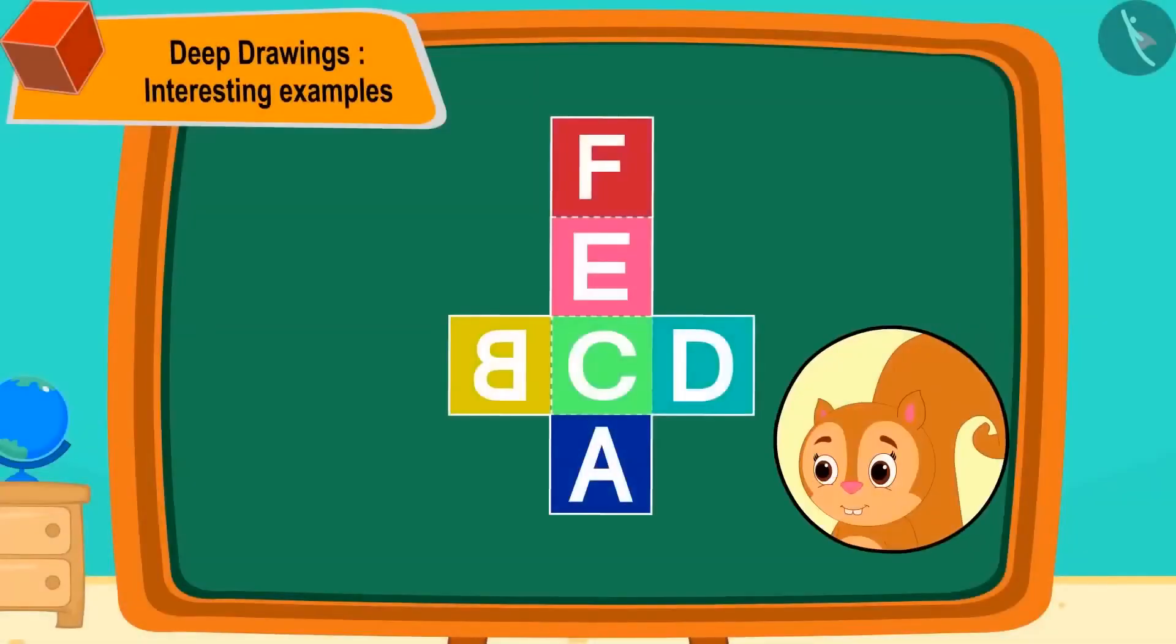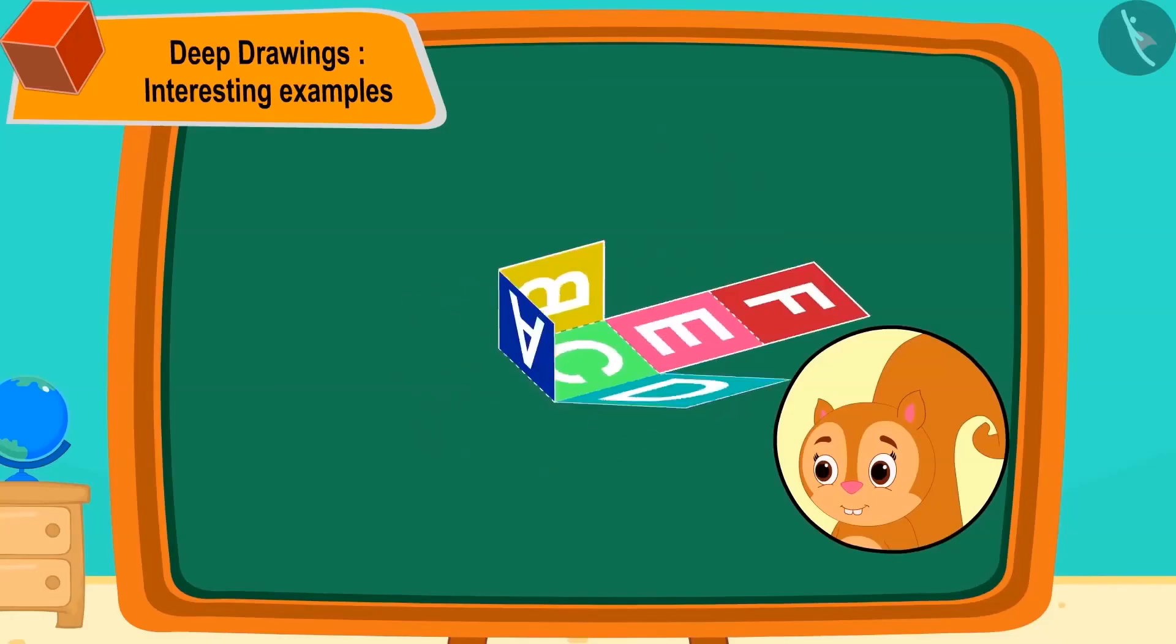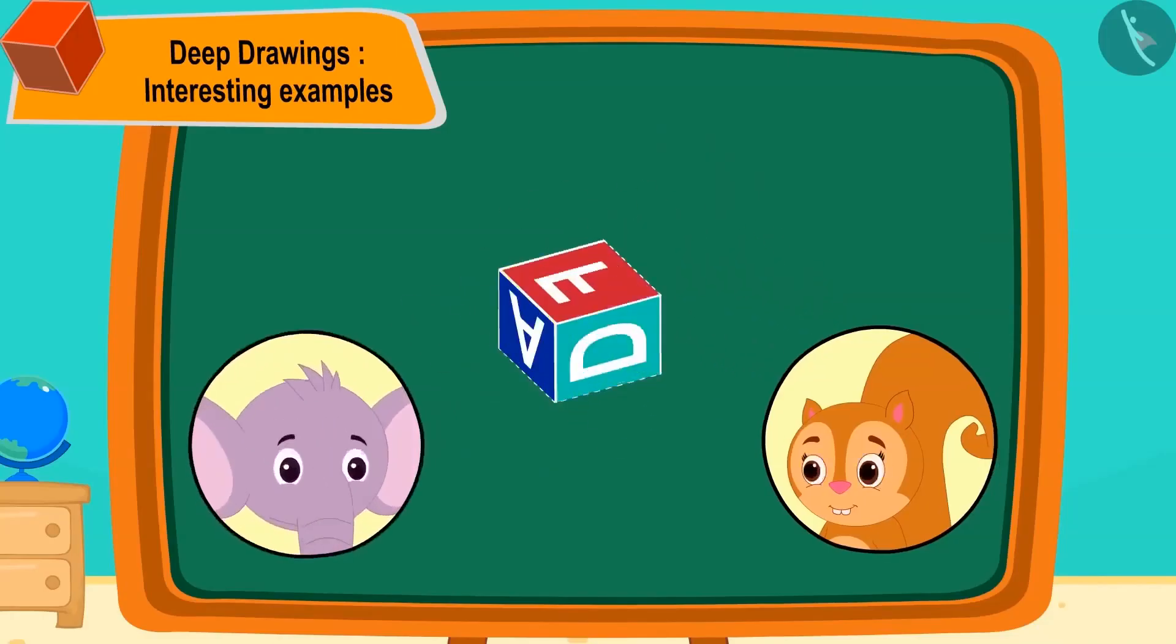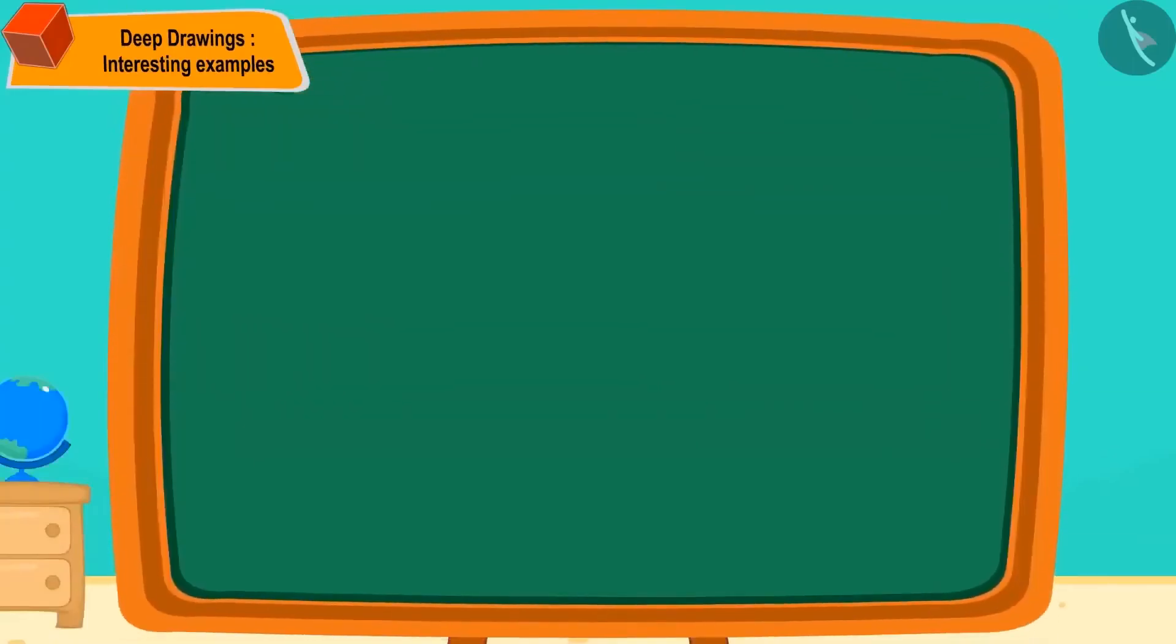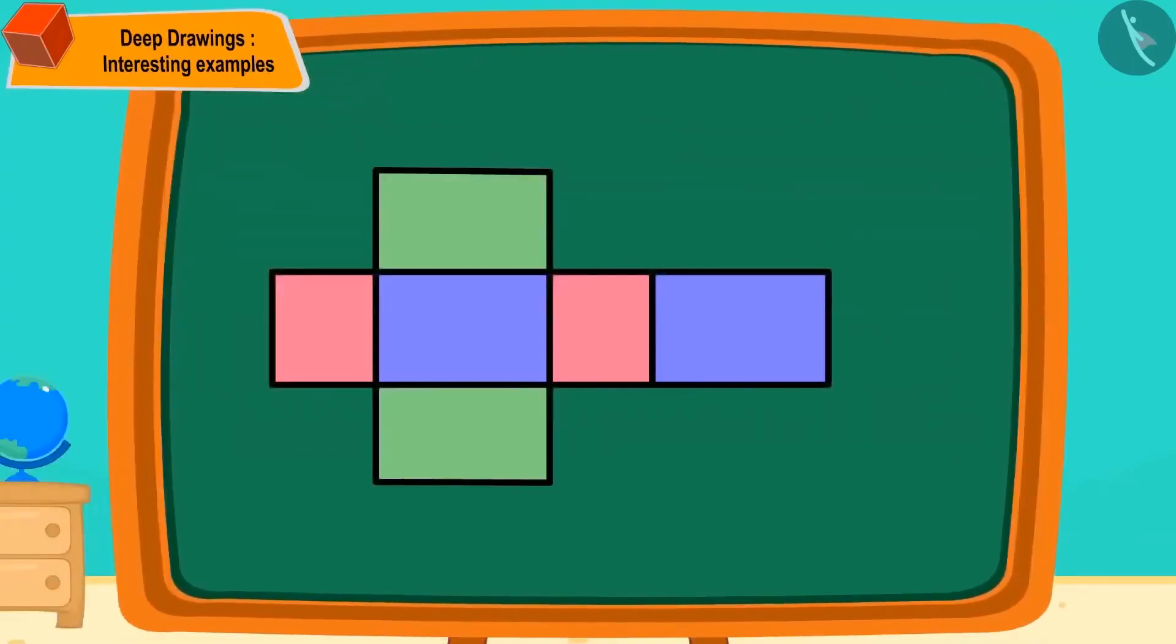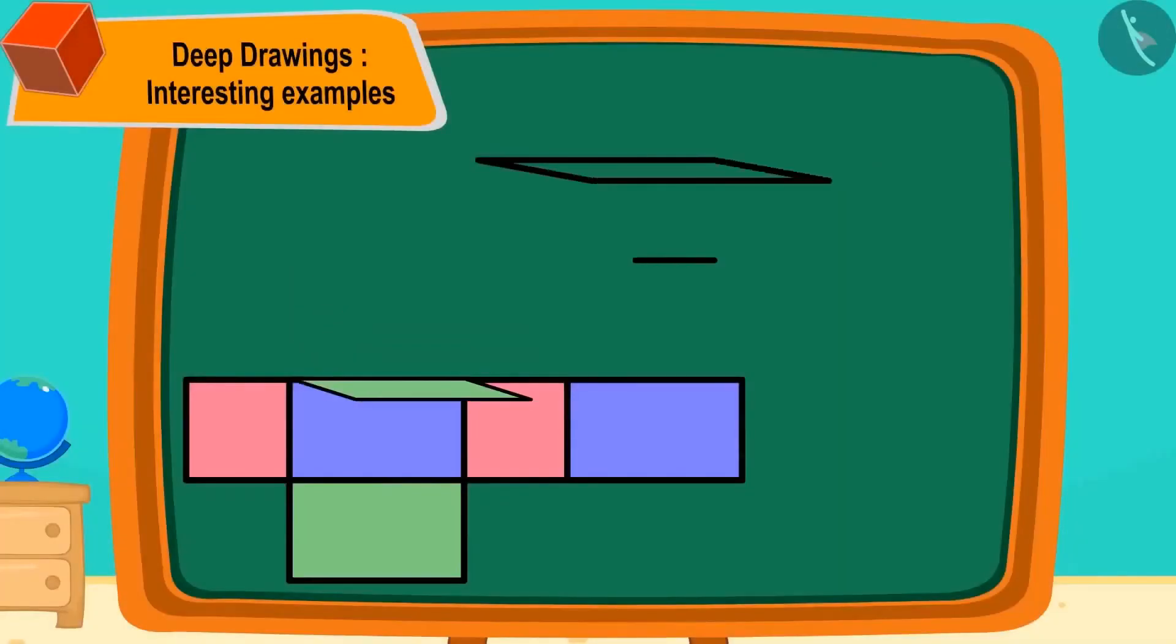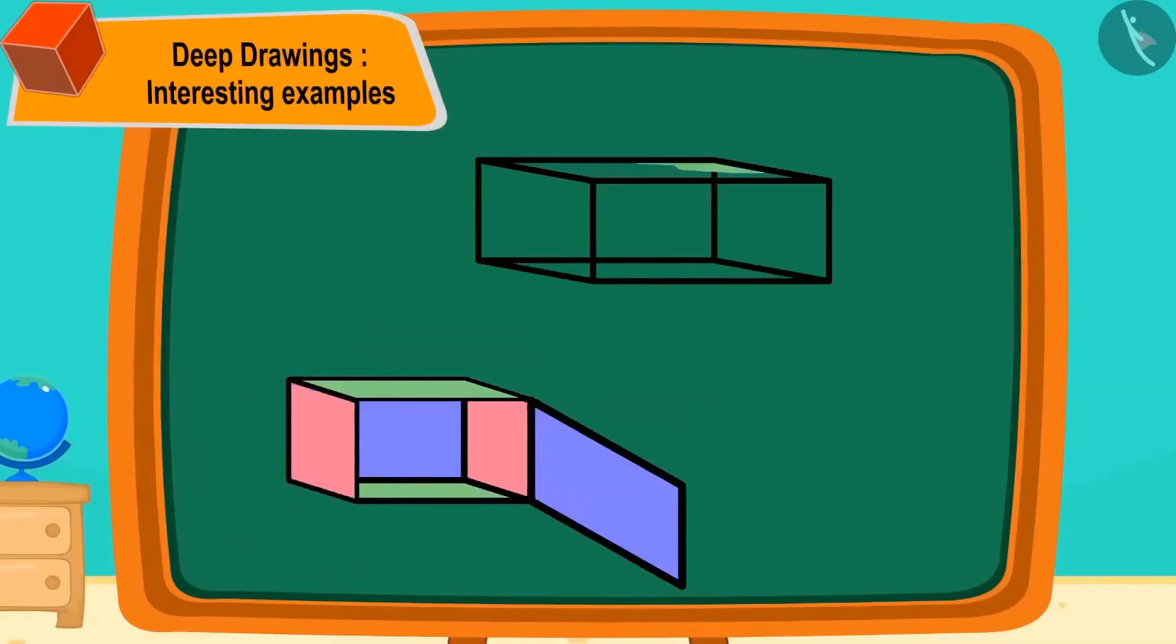Chanda made a dice by folding a net made of paper, and Chanda and Appu started playing their game. Children, you can now play a game of making a deep drawing of a cuboid with your friends. If you want, you can stop the video and make it. Children, you can make a deep drawing of a cuboid in this way.